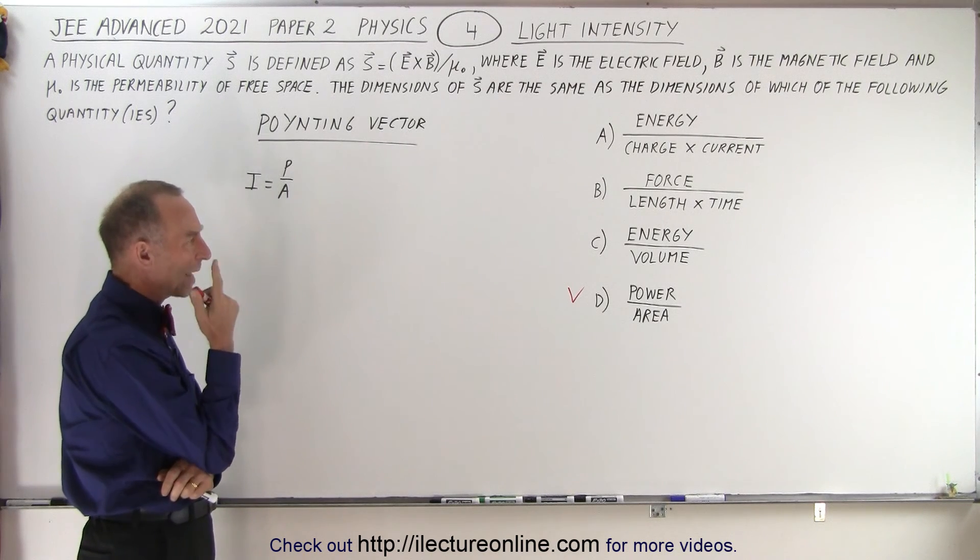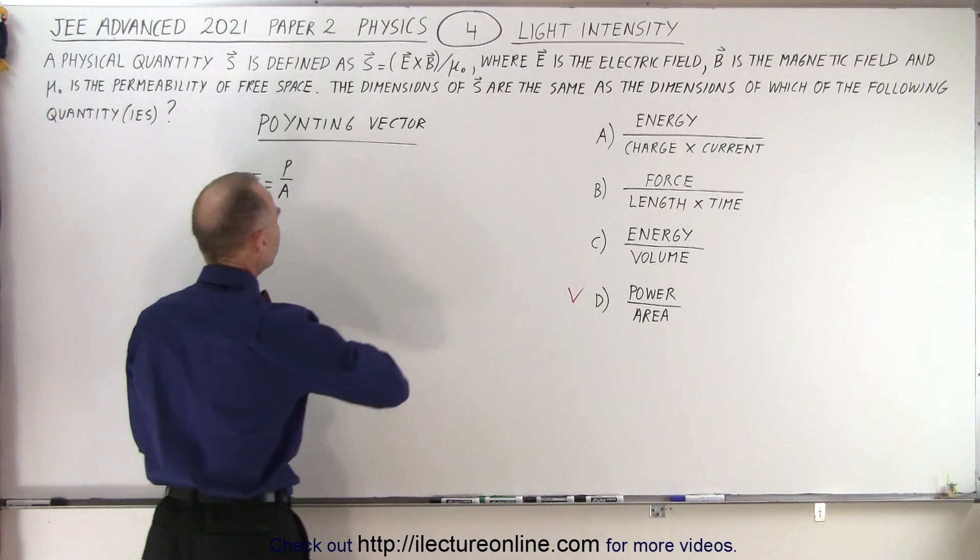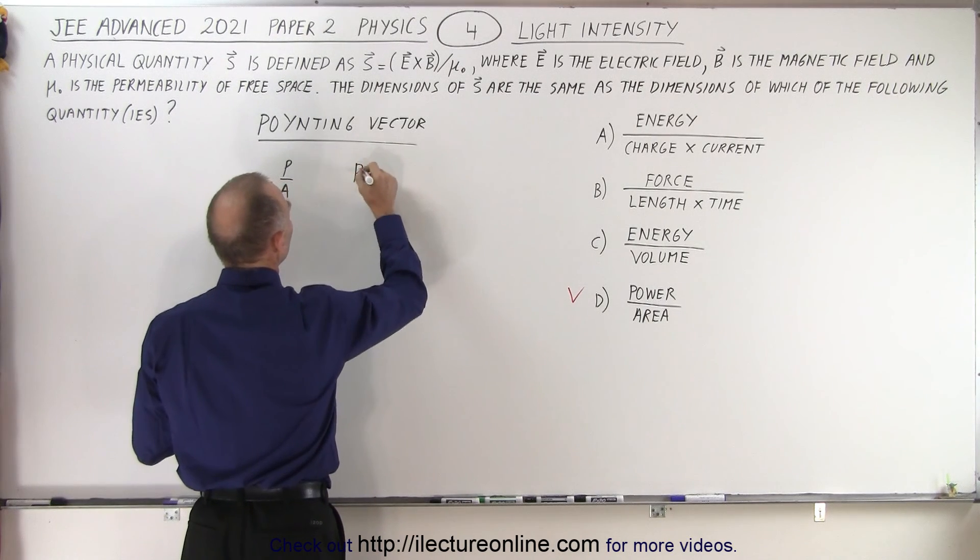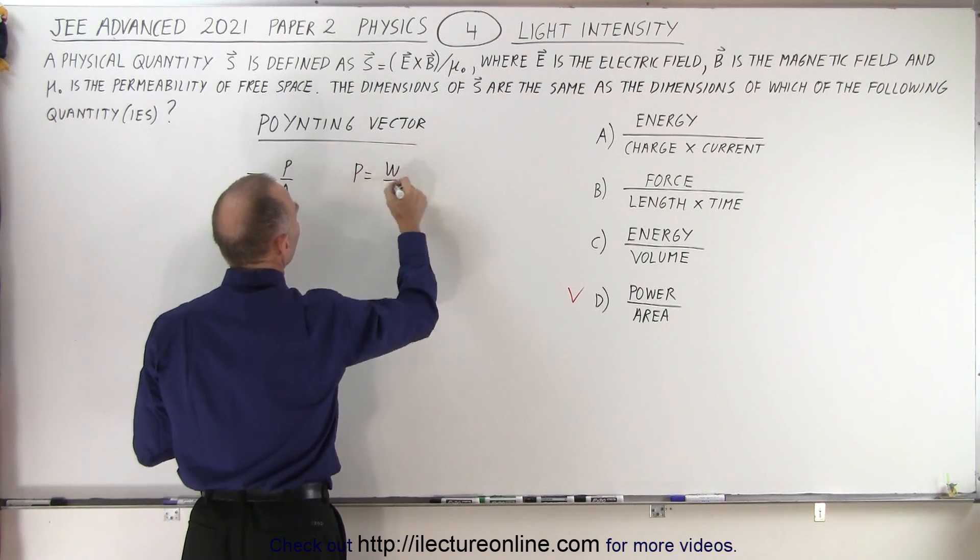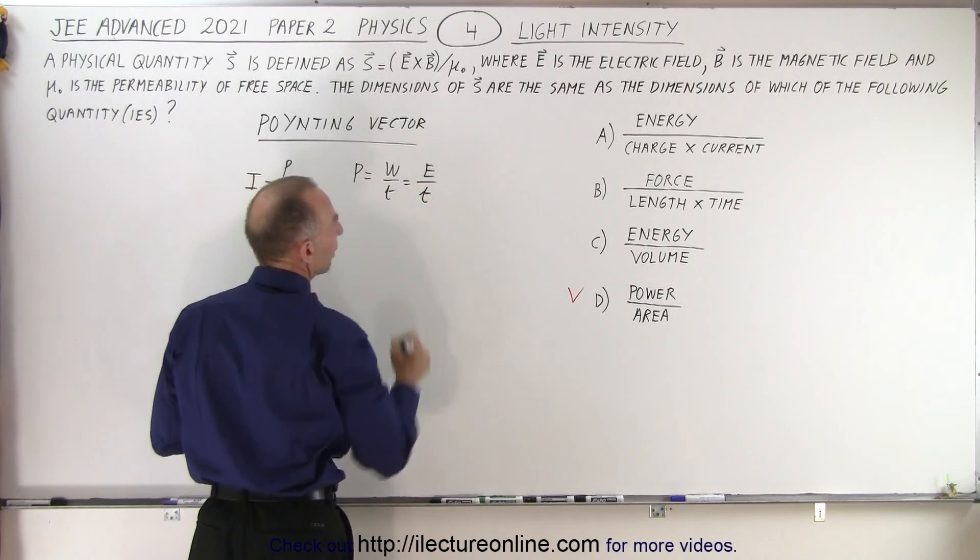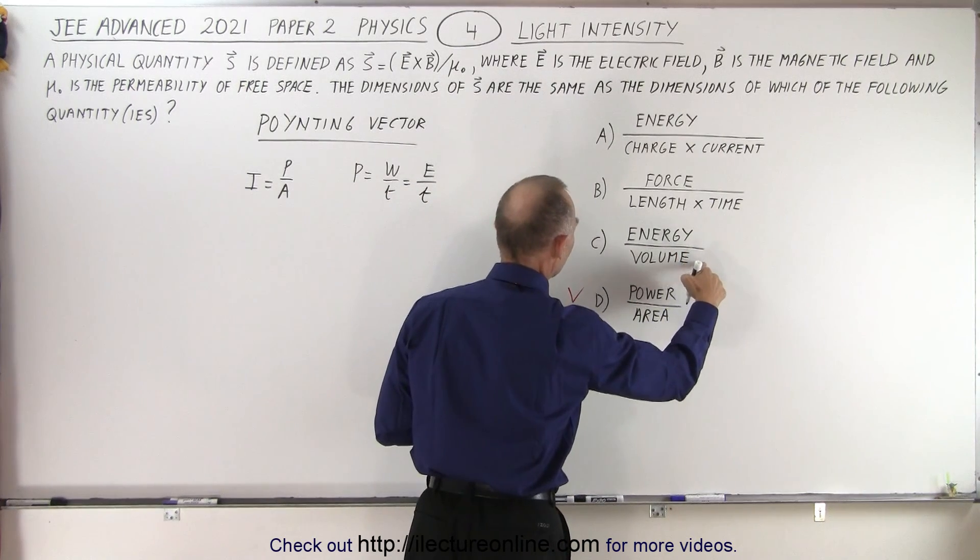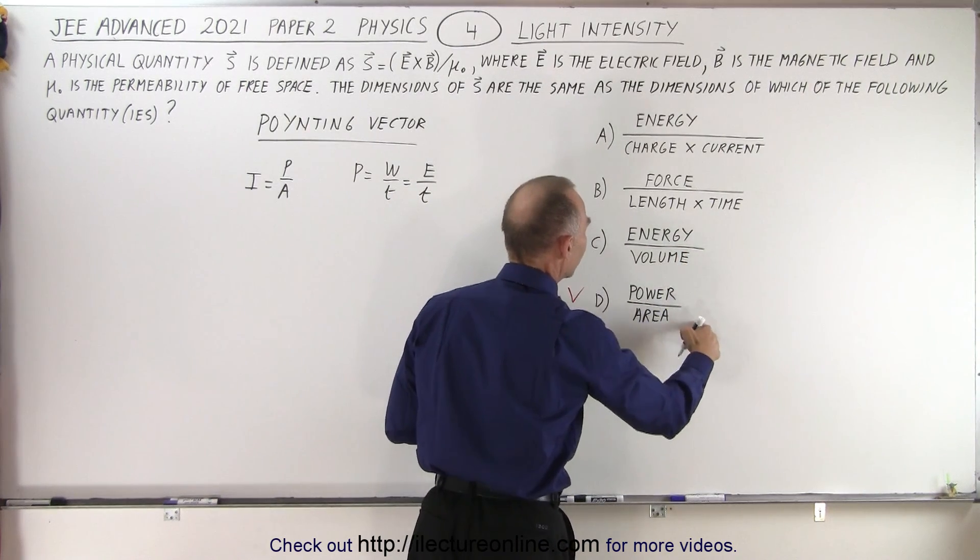We have energy over volume. Power is equal to work divided by time, which is the same as energy divided by time. So we have energy divided by volume. Now, volume would be area times length.